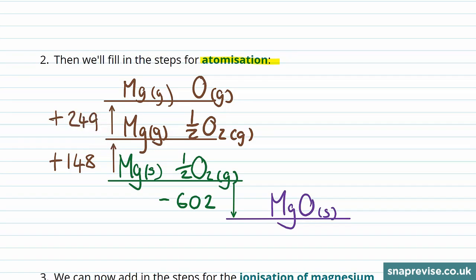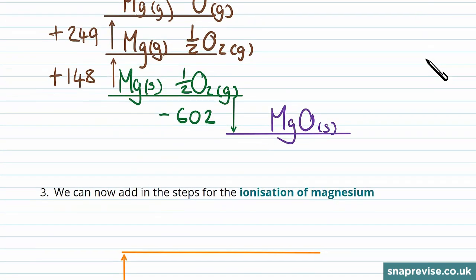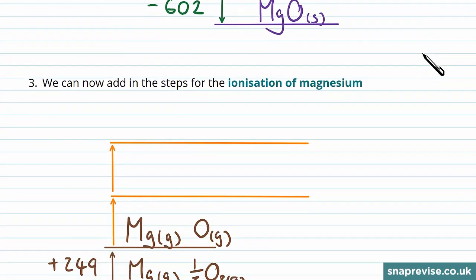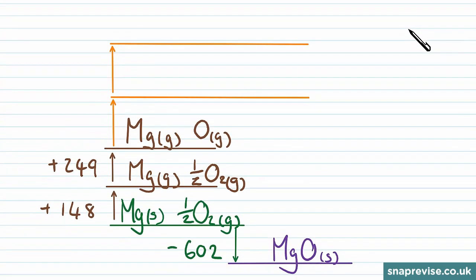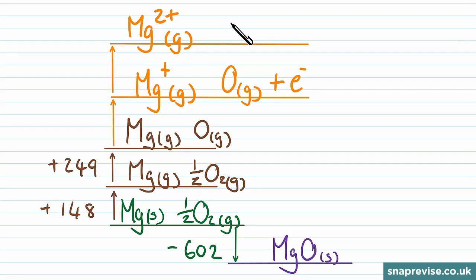Now we want to make the atoms charged into ions, so we're going to start with the ionization of magnesium. Because it's two plus ion, we're going to do this in two steps. So initially we form the one plus ion, which is still gaseous, and we do this by taking away one electron, which you should remember to show in the Born-Haber cycle. And then in the next step we take another electron away from the one plus ion to form a two plus gaseous ion. And now we have two electrons on this rung, which we're going to give to oxygen.